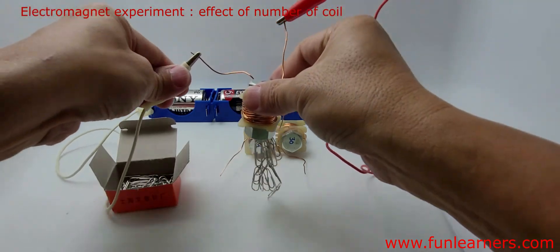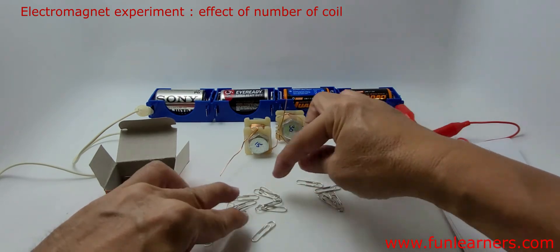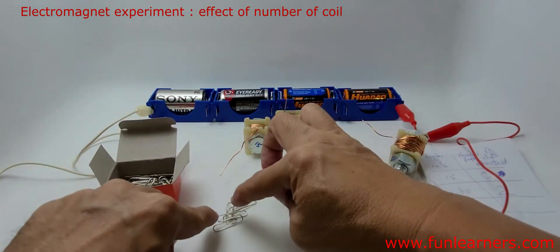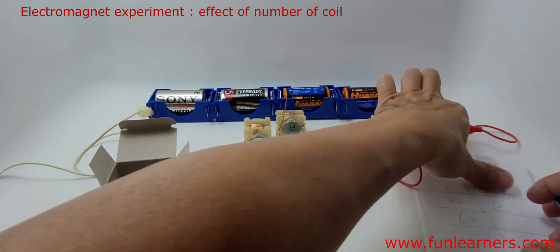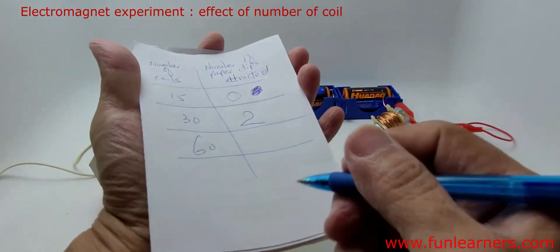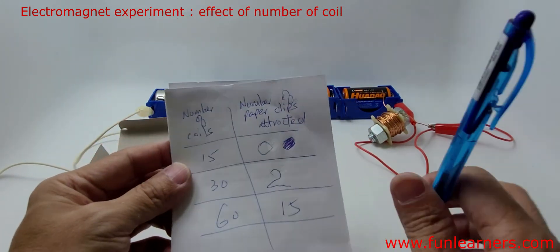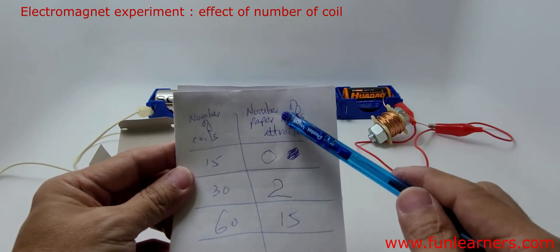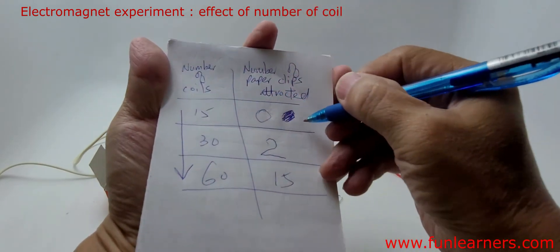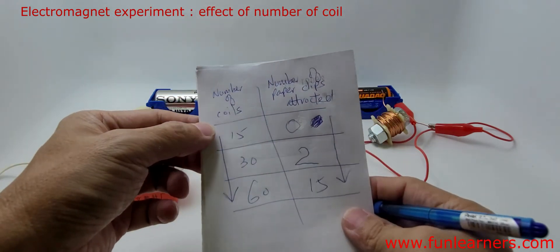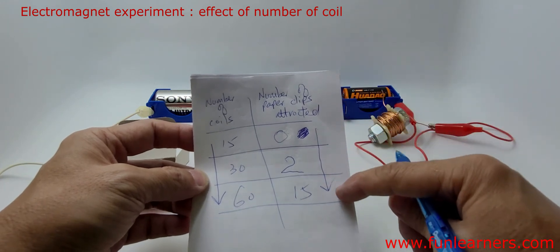Let's count how many we have: 1, 2, 3, 4, 5, 6, 7, 8, 9, 10, 11, 12, 13, 14, 15. So the variable change is number of coils, and the variable measured is number of paper clips attracted. The conclusion: as the number of coils increases, the number of paper clips attracted increases.